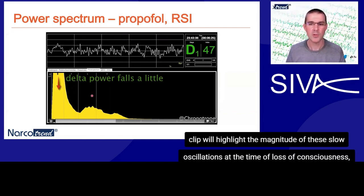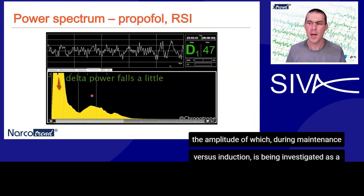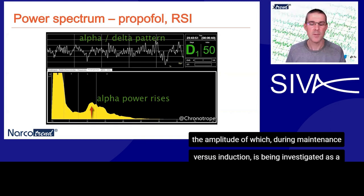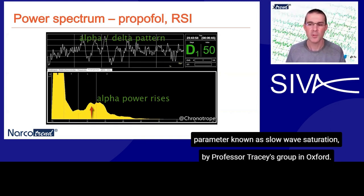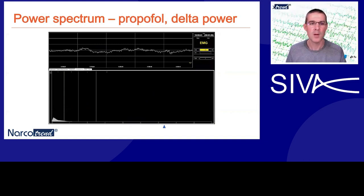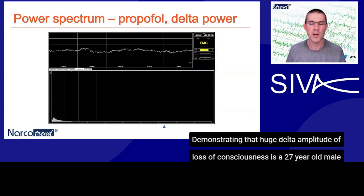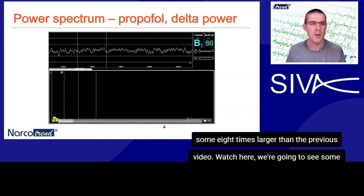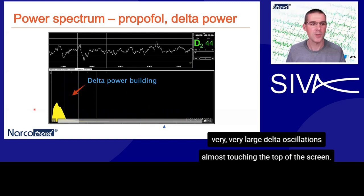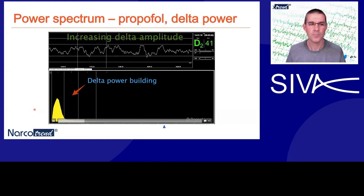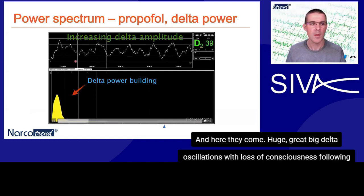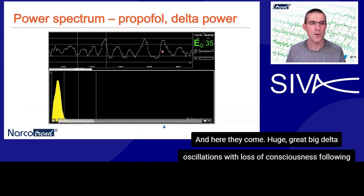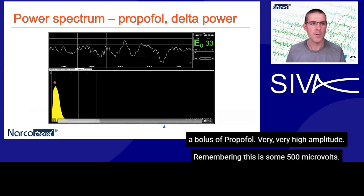The next clip will highlight the magnitude of these slow oscillations at the time of loss of consciousness, the amplitude of which during maintenance versus induction is being investigated as a parameter known as slow wave saturation by Professor Tracy's group in Oxford. Demonstrating that huge delta amplitude at loss of consciousness is a 27-year-old male undergoing a TCI induction. I've chosen a power scale of 500 microvolts for this young brain, some eight times larger than the previous video. We're going to see very large delta oscillations almost touching the top of the screen — and here they come — huge great big delta oscillations with loss of consciousness following a bolus of propofol. Very very high amplitude, remembering this is some 500 microvolts.